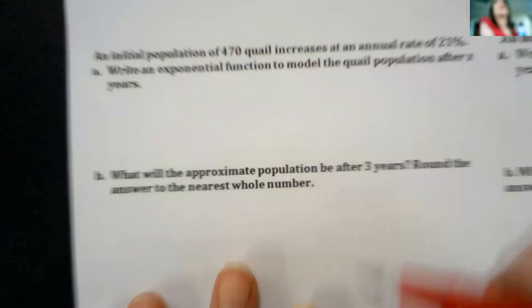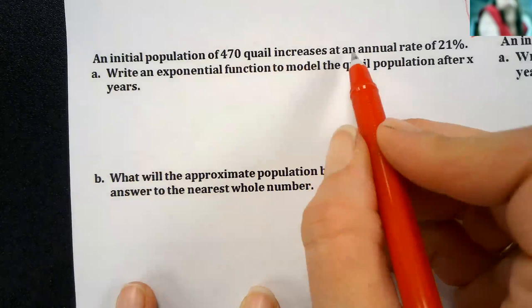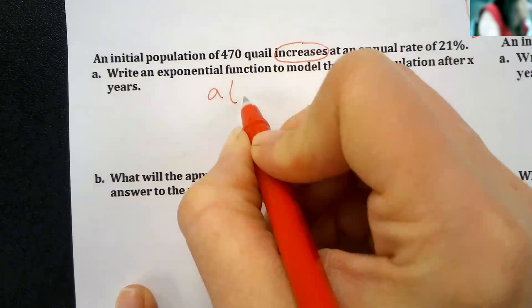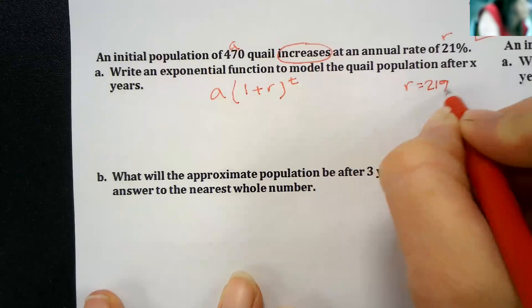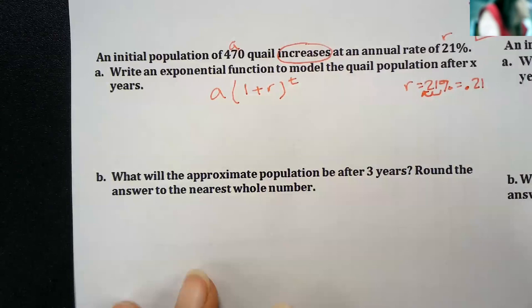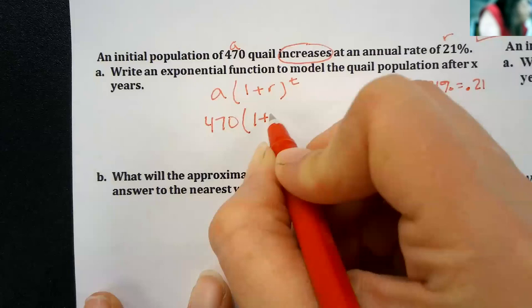Talk about this one. Pause it if you need to go back. An initial population of 470 quail increases at an annual rate of 21%. This is an increase problem again. We're talking about this formula, 1 plus R to the T. A is 470. R is 21%, which as a decimal would be .21. Slide that decimal over two places. So we're going to have 470 times 1 plus .21 to the T.